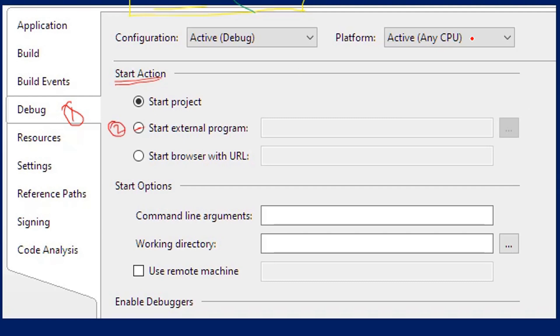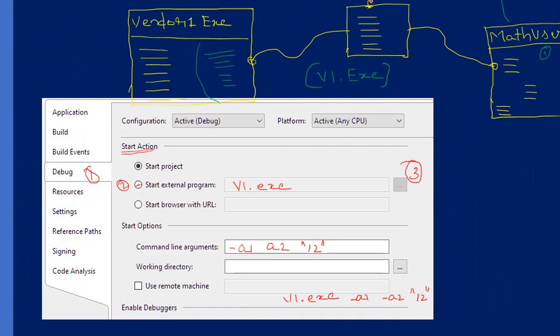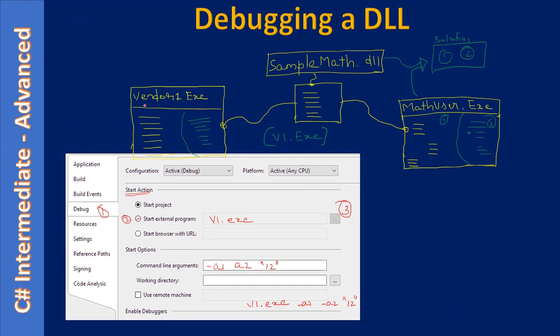So you can use this Start External Program radio button and then you can browse to the EXE, vendor one.exe. Once you select that, you will be seeing V1.exe with a path here. And if they have any command line argument, say for example there are some command line switches a1, a2, 1, 2, you can pass these command line switches here as part of command line argument. So that's all we have to do. Without having the source code for EXE, you can directly launch the DLL. Here as part of Debug, if you see, a DLL cannot launch on its own - it needs some consumer.